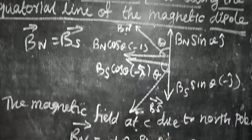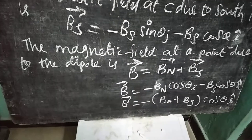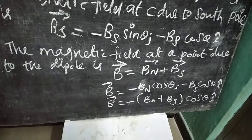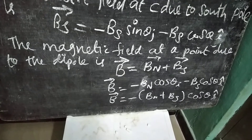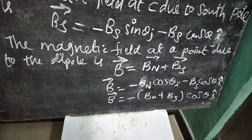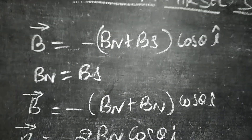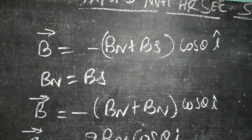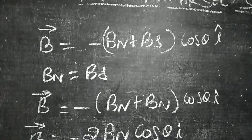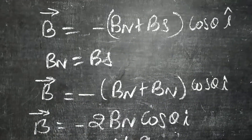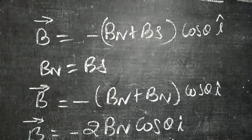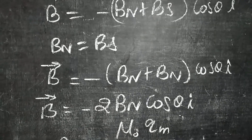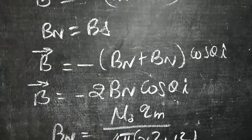Adding the components, B vector equals minus BN cos theta î minus BS cos theta î. Taking i-hat common outside, B vector equals minus (BN plus BS) cos theta î cap. Since BN equals BS, we have B vector equals minus 2BN cos theta î cap.